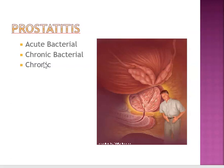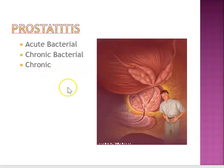Signs and symptoms of chronic pelvic pain syndrome include low back pain, pain in the penis, testicles, scrotum, or rectum, and there's no bacteria identified in the urine. However, there are abnormal inflammatory cells in the prostate secretions for the inflammatory type.